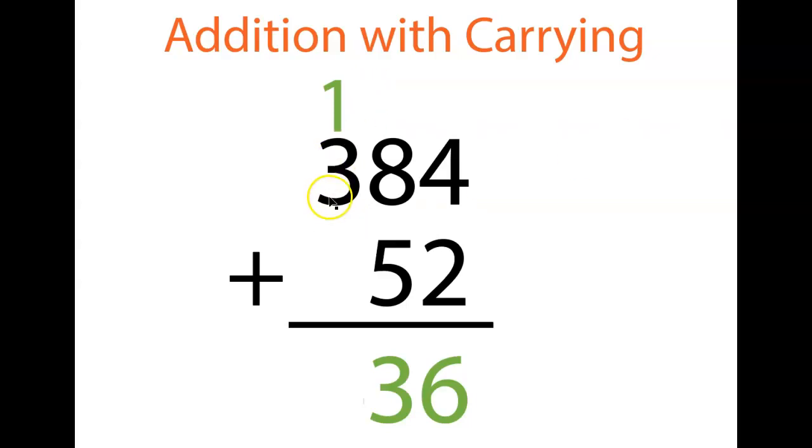And then in that final column, we're going to add up our hundreds. Three plus one is four hundreds. Four hundred thirty six is going to be our final answer.